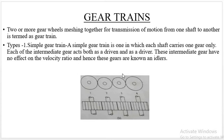Let's talk about gear trains. We have a combination of gears on a shaft — this is a gear train. Two or more gear wheels mesh together for transmission of motion from one shaft to another; this is termed as a gear wheel.